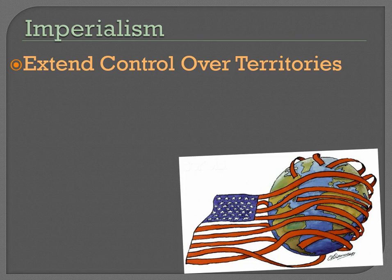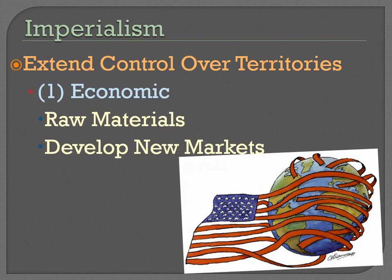If we take a look at the definition of imperialism, imperialism is generally extending control over territories. There are three reasons for this. Number one: economic. As a nation, if you want to expand, you need lots of raw materials, especially in the late 1800s and early 1900s, the era of the industrial revolution. At a certain point, the United States ran out of raw materials — or didn't run out, but could use more — and so they needed other territories for their raw materials.